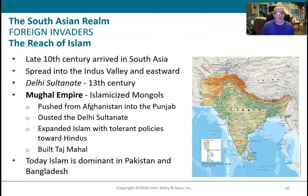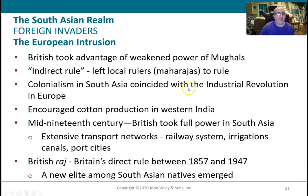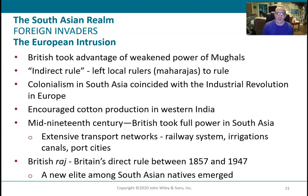Islam is dominant in Pakistan, Bangladesh, and Afghanistan. This slide gives the history of how Muslims moved into this area. The Mughals brought Islam to the region, and the British took over where the Mughals left off in colonial times.